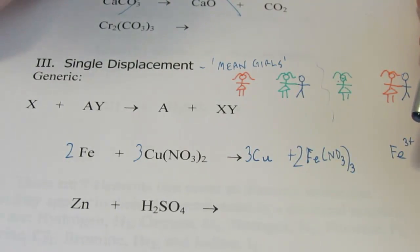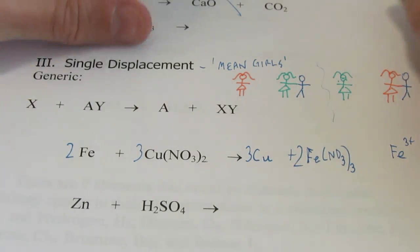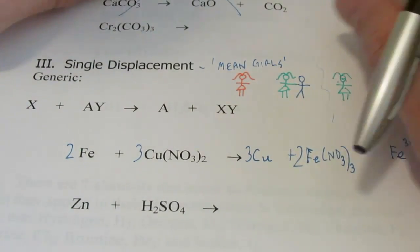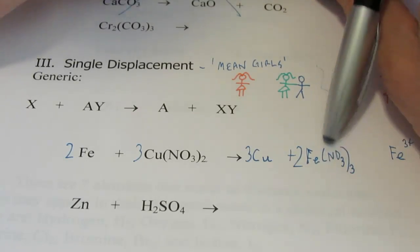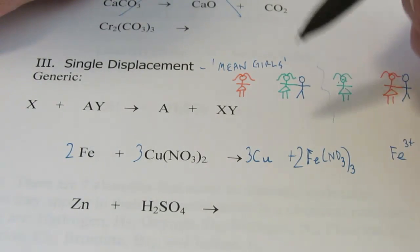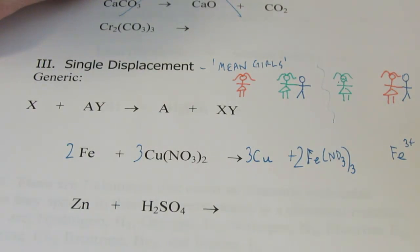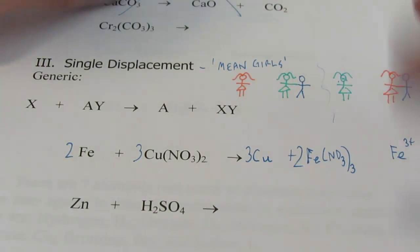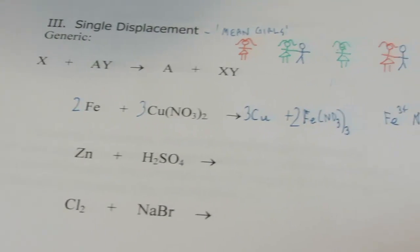Now in a recent lab that we did, we called it our silver lab. It wasn't the most recent, but it's one that we've done fairly recently, where we had copper and silver nitrate. We ended up making silver and copper 2 nitrate, if you remember, in that experiment. Okay, try the next one on your own.